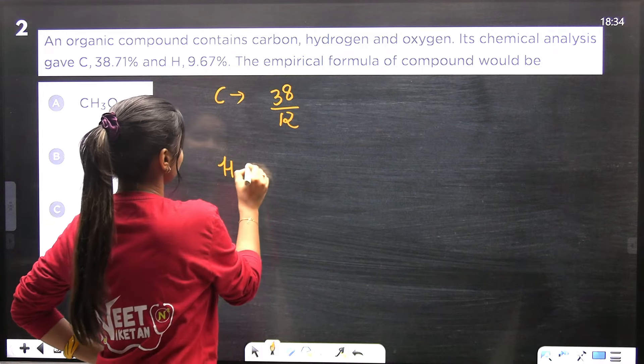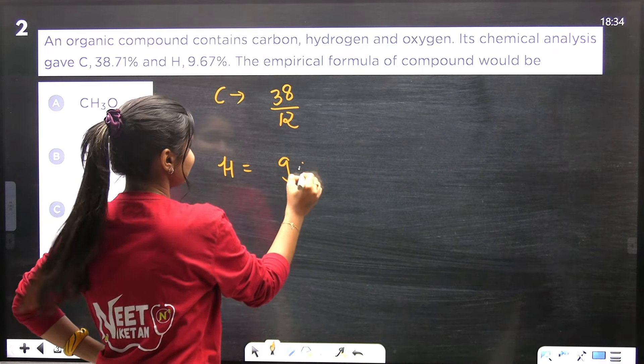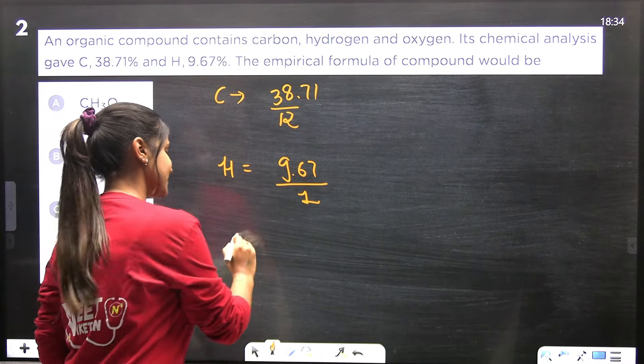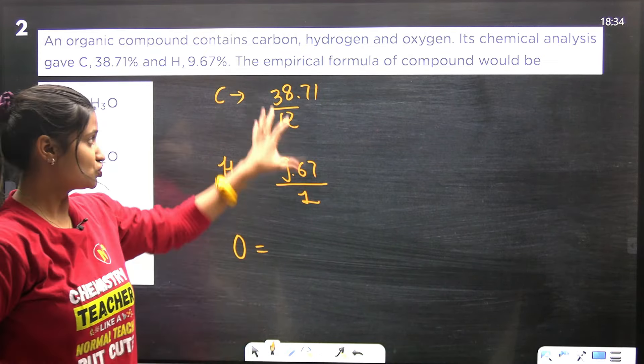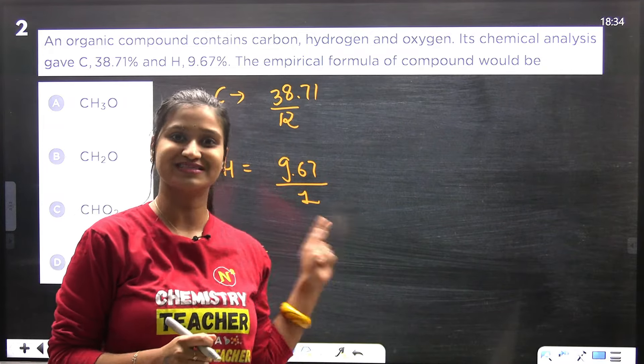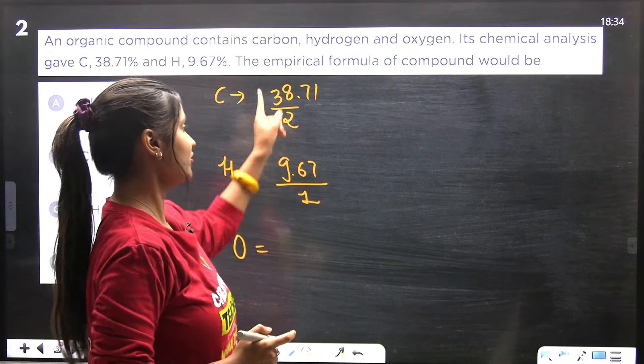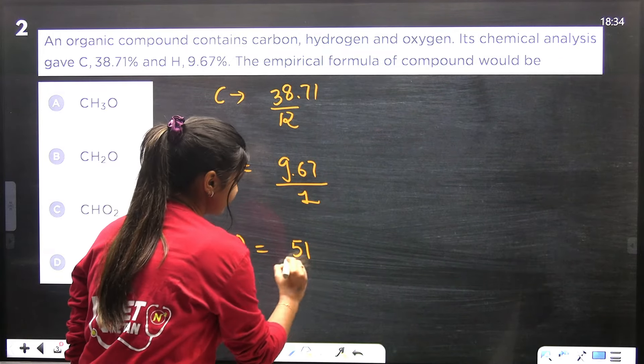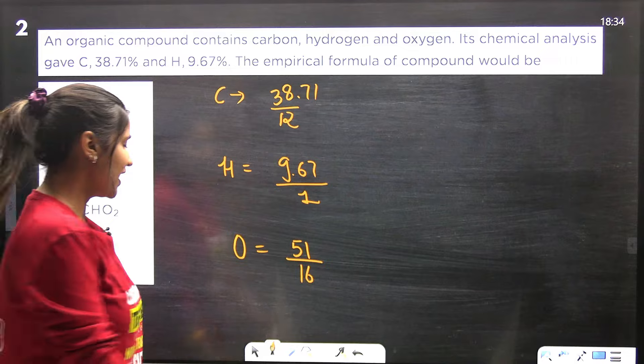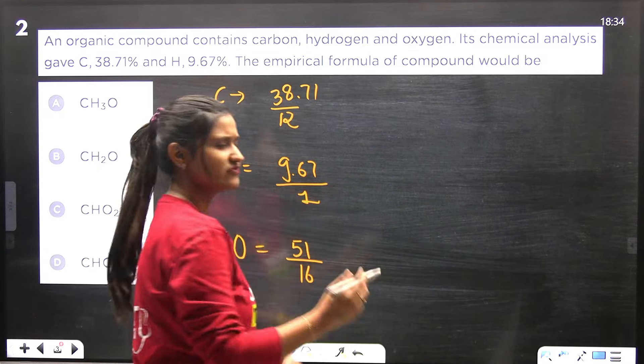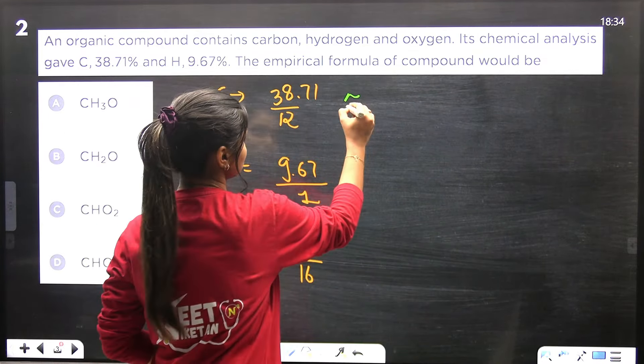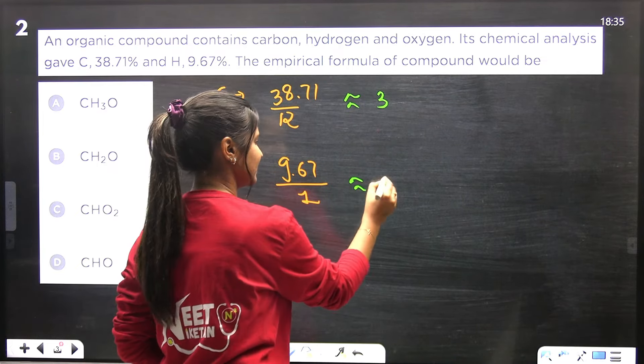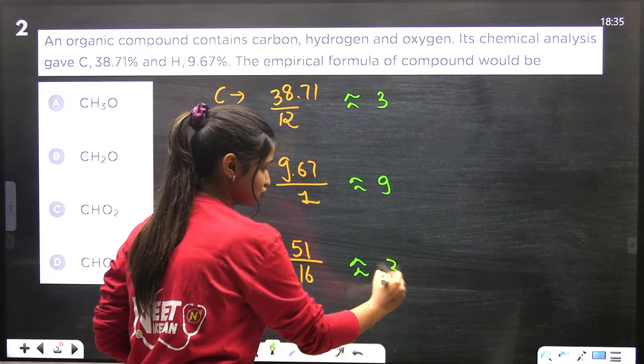For hydrogen, 9.67 by 1. It was 38.71 percent for carbon, okay. And if we talk about oxygen, the total percentage will be 100, so oxygen will be 100 minus 38 minus 9, approximately 51. So it will be 51 over 16. Now you need to use approximation. It will come out to be around 3, 12 times 3 is 36.